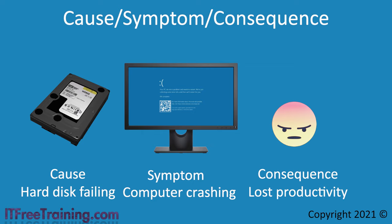When fixing IT problems, always think about the consequences to the business — this will often direct you to what should be fixed first and how to go about it. Often a business cares more about the consequences than the problem itself. It is also important to consider that a particular cause may be a symptom of a much larger problem. For example, if hard disks keep failing, it may be a manufacturing issue with a particular model. I once worked in a business where motherboards kept failing due to poor quality capacitors. Once we identified which model was affected, we proactively removed those computers from service before they started failing.